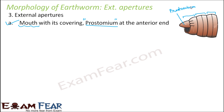This lid-like structure is known as the prostomium — it is the covering of the mouth. When the earthworm wants to open the mouth, the lid opens; when it wants to close, it closes. The prostomium also helps the earthworm burrow in the soil because its shape is like a sharp knife, making it easier to dig. The mouth is part of the first segment, which is known as the peristomium.